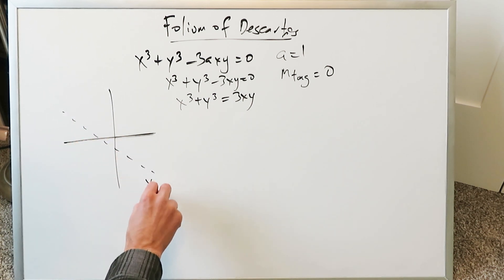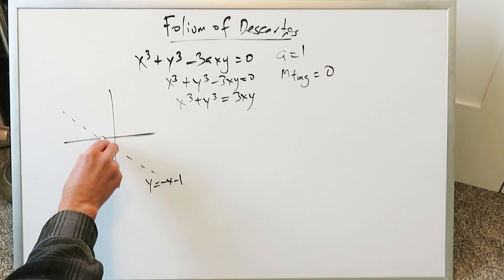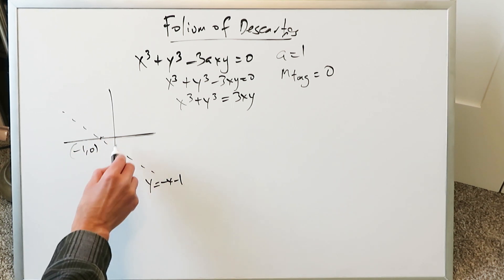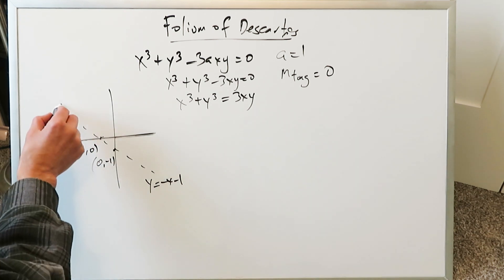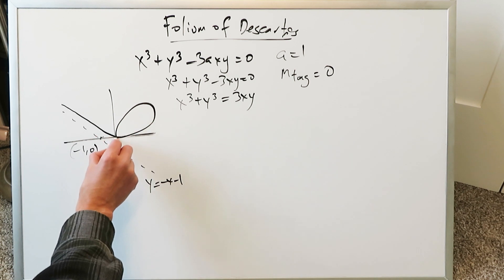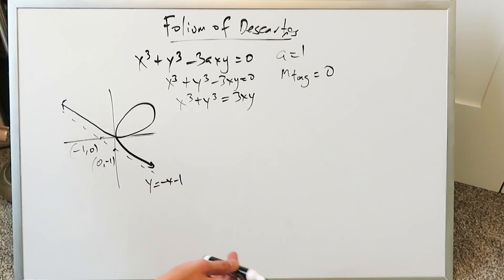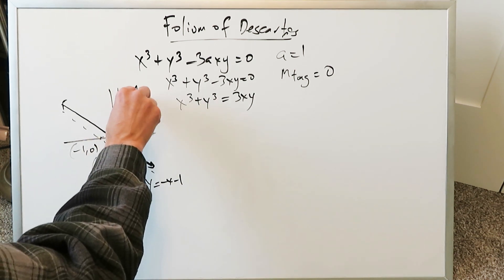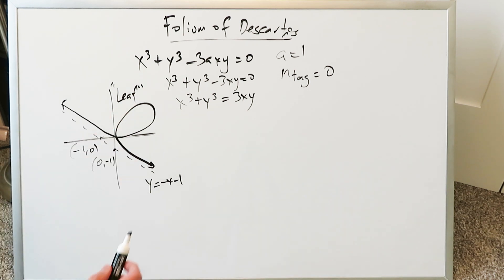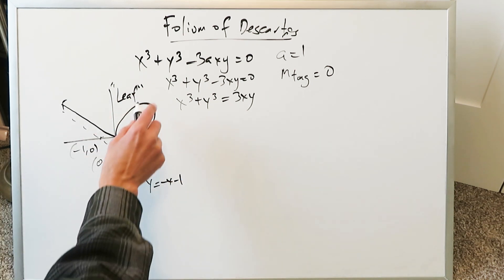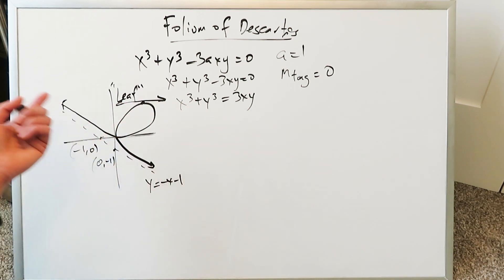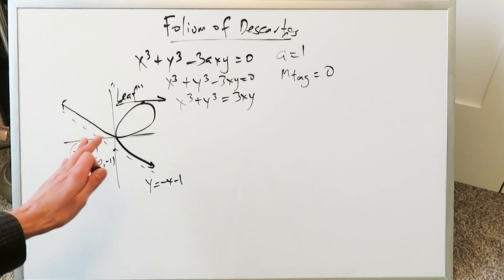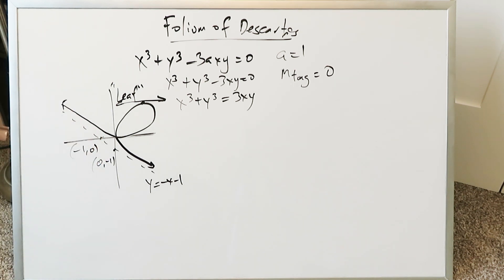There's an oblique asymptote with equation y equals negative x minus 1. There are points at (−1, 0) and (0, −1) on your oblique asymptote. The curve comes from there, goes to the origin, loops around, goes back to the origin, and drives away. That specific loop is called the folium — Latin for leaf. We have to determine where on this leaf we can generate a horizontal tangent line. Visually, you could picture a horizontal line forming at the top, and we need to find all such points.